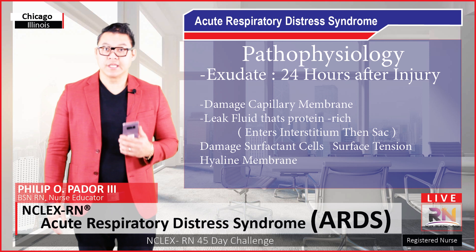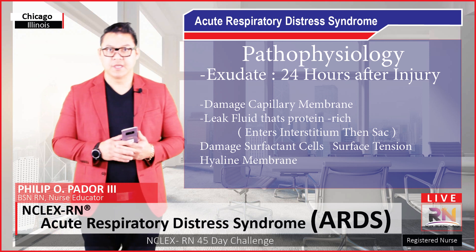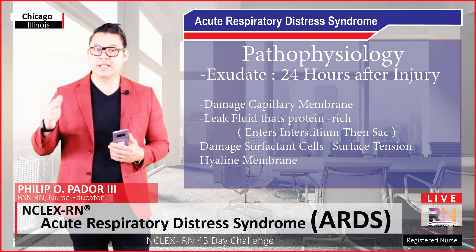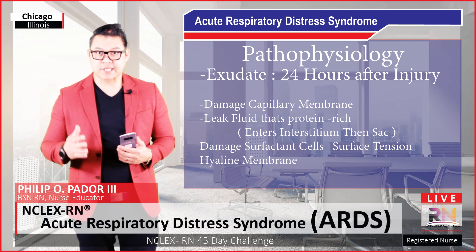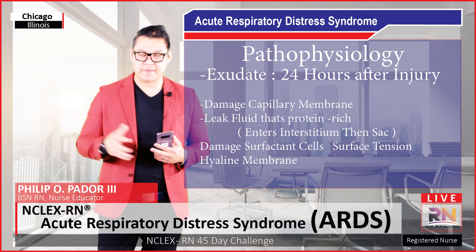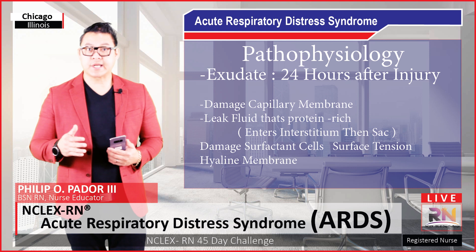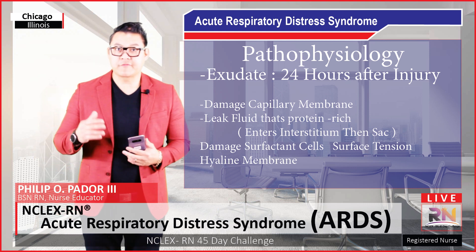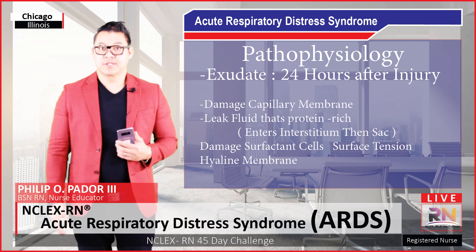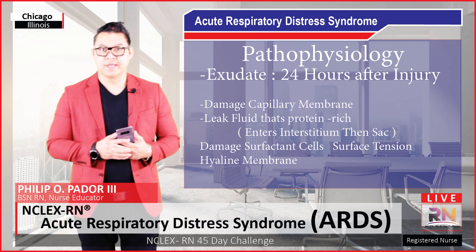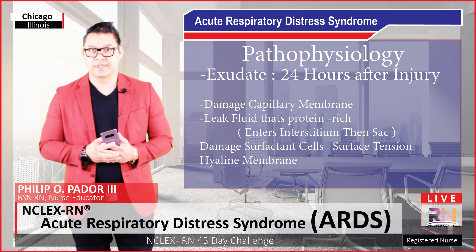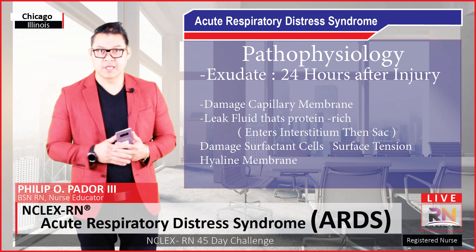At first, this fluid is going to enter into the interstitium — that space in between the sac and the capillary membrane. So whenever you're listening to the lung sounds in the early part of this, they may sound normal or a little bit diminished. You're not going to start hearing abnormal sounds until the fluid starts going into the alveolar sac — that's where it's going after the interstitium. And that's where this patient is going to have pulmonary edema, so you can hear those crackles.